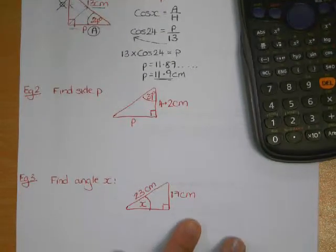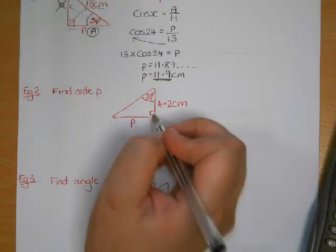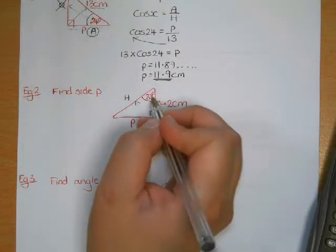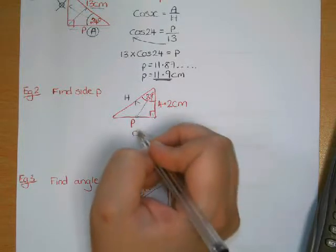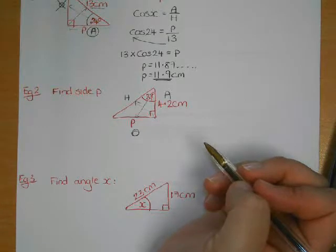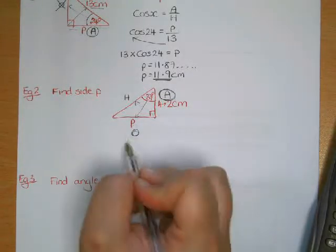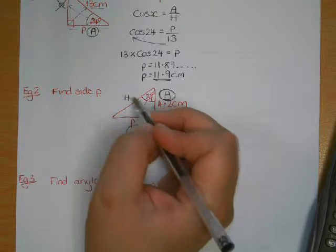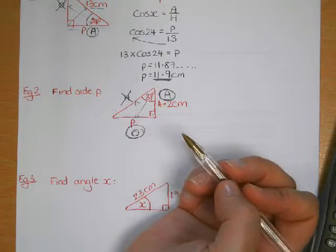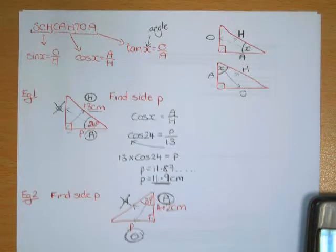Let's do another one. You start each question the same: identify the sides. There's the right angle, so the hypotenuse is opposite it. There's the angle we're using — the opposite side is opposite it, and the adjacent is beside it. We know 4.2, which is the adjacent. P is what we're trying to find, which is the opposite. We don't need the hypotenuse, so cross it out. O and A means we use tan.